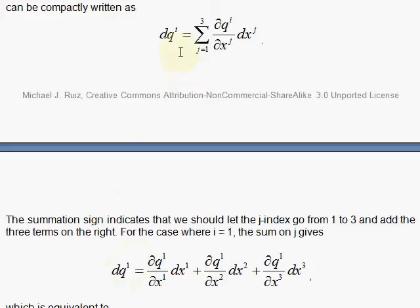And here I'll write one out for you down here. So when i is one, then you have dq1, and then here you have the partial with respect to x1, and since the j is summed over—j is from one to three—you get three terms there.